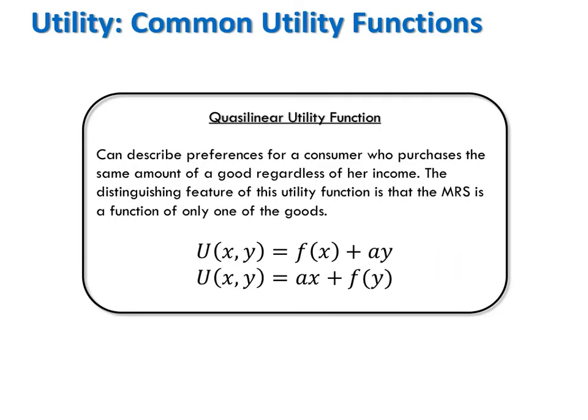A fourth common class of utility function that we'll use a lot in this class is the Quasi-Linear Utility function. This function describes preferences for a consumer who purchases the same amount of a good regardless of her income. That is, for Quasi-Linear Utility functions, one of the goods is an income-neutral good whose demand does not depend on income. For now, what I want you to see is that for Quasi-Linear Utility functions, one and only one of the goods has a constant marginal utility.